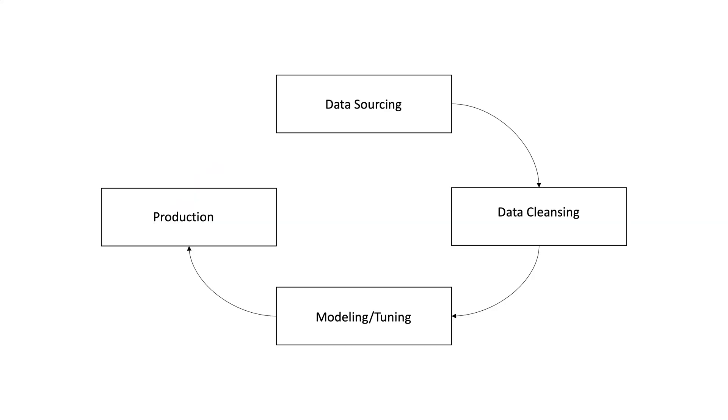The first step in any machine learning project is problem definition. Once a problem has been identified, you'll proceed to the first step in the process. A synonym for the machine learning process is the machine learning pipeline. This process can be distilled into four core steps. Number one: sourcing your data.